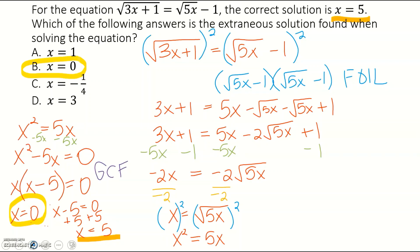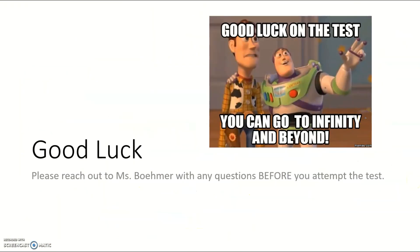Even though 0 is not a solution, you still have to go through all the work to solve for it — that's how a problem on the test might be worded, to make sure you do all the work of solving a radical equation, especially one with a square root on both sides. That's the end of the chapter review. If you have any questions, please reach out to me before you attempt the test, and good luck.